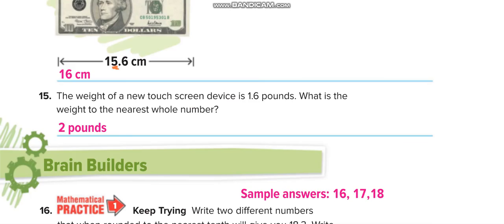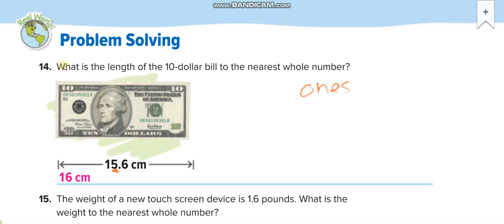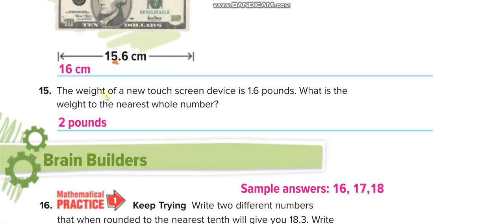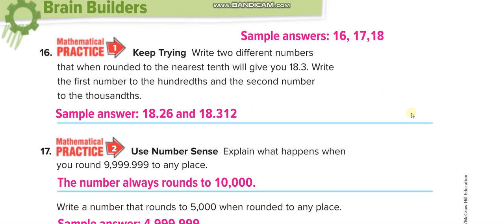Next page: what is the length of a ten-dollar bill to the nearest whole number? Whole number means ones, so underline the ones and check the next number. It's more than five, so add one to the underlined digit — the answer is 16 centimeters. The weight of a new touchscreen device is 1.6 pounds. Round to the nearest whole number: underline ones, next number is 6, more than five, so add one — the answer is 2 pounds.